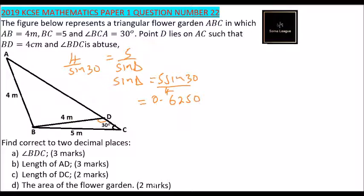We can see it is an obtuse angle, so it is greater than 90 degrees. Therefore, the angle whose sine is this, the sine inverse is 38.68, so it is 180 minus 38.68, and that should give you 141.32 degrees.